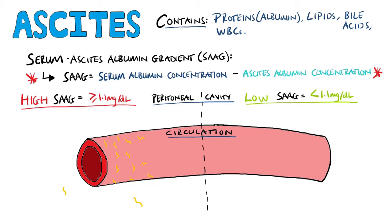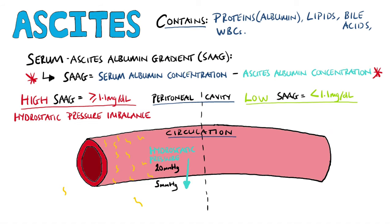Ascites with a high serum ascites albumin gradient tells us that fluid is being pushed out of circulation, causing an increase in the concentration of albumin in the serum, because albumin is normally too large to pass through the peritoneum, while the concentration of albumin in the ascitic fluid is quite low. This therefore is a hydrostatic pressure imbalance.